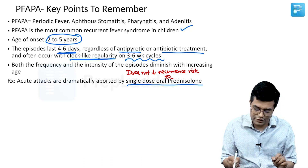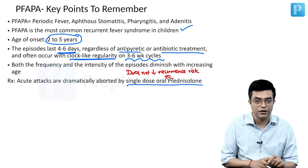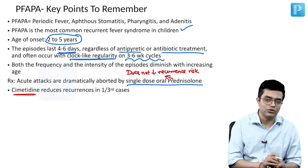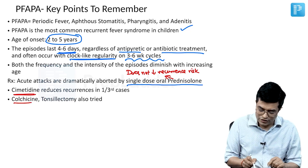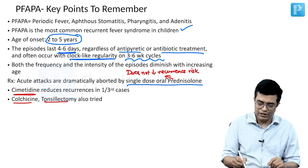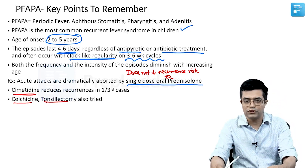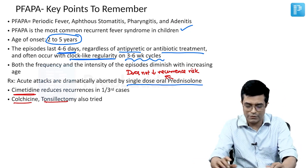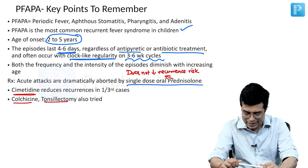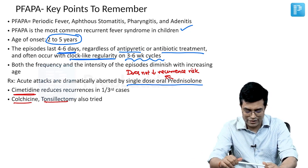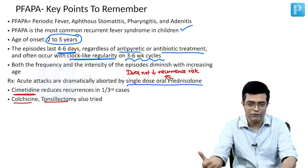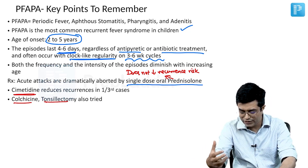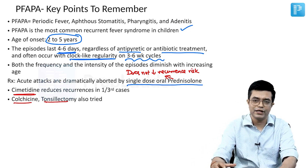Prednisolone does not reduce the risk of recurrence. For recurrence, you will have to use Cimetidine — in one third of cases it reduces recurrence. Colchicine and tonsillectomy have also been tried and shown to reduce recurrence risk, although Nelson says tonsillectomy is usually the last resort. Anakinra has also been proposed to be effective in aborting acute attacks due to probable involvement of the interleukin-1 pathway.